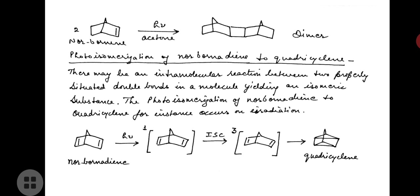The next example is the photoisomerization of norbornene to quadricyclane. There may be an intramolecular reaction between two properly situated double bonds in a molecule, yielding an isomeric substance. The photoisomerization of norbornene to quadricyclane occurs on irradiation. Here is the reaction: norbornene on irradiation forms an excited triplet state. Intersystem crossing (ISC) results and a triplet excited state is formed, which then forms quadricyclane.